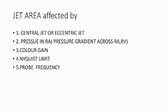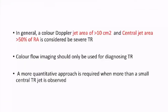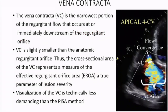Ultimately, jet area is only a rough measure of tricuspid regurgitation and not very specific, as it is affected by various parameters. In general, a color Doppler jet area of more than 10 cm² or a central jet area occupying more than 50% of the right atrium is considered severe TR. Color flow imaging should be used only to diagnose TR, not to quantify it. A more quantitative approach is required when more than a small jet is observed.